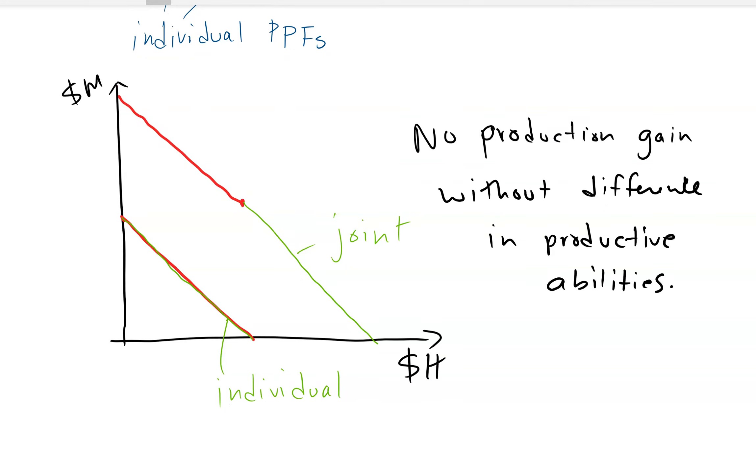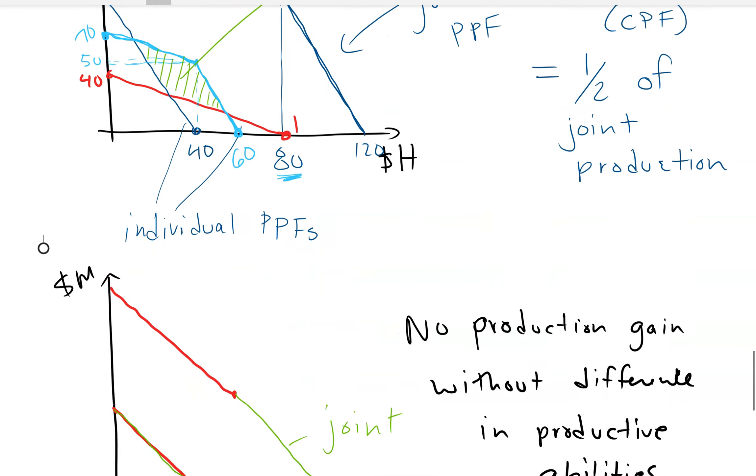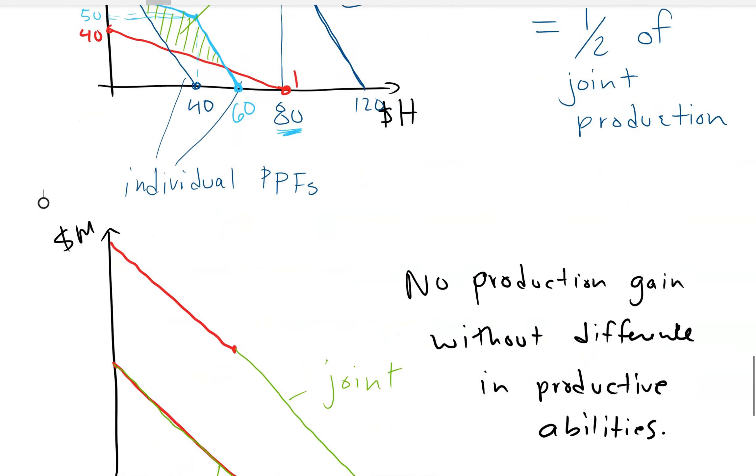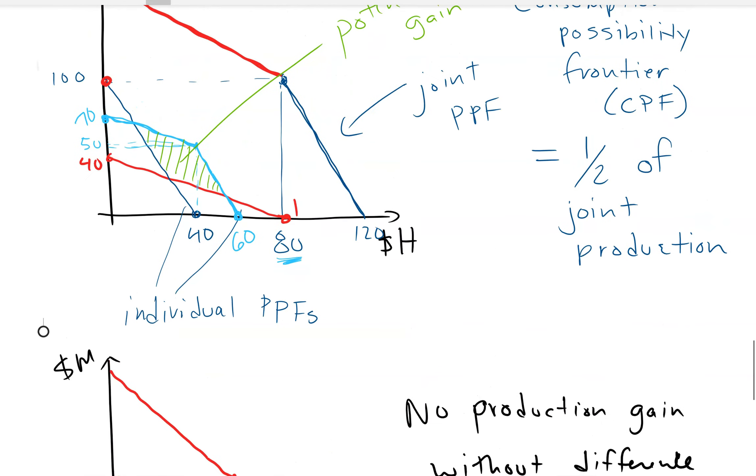And that kind of gets us to the final point, for now at least. This model kind of points out why marriage was so strong in history, and why it's, as an institution, becoming a little bit less important.